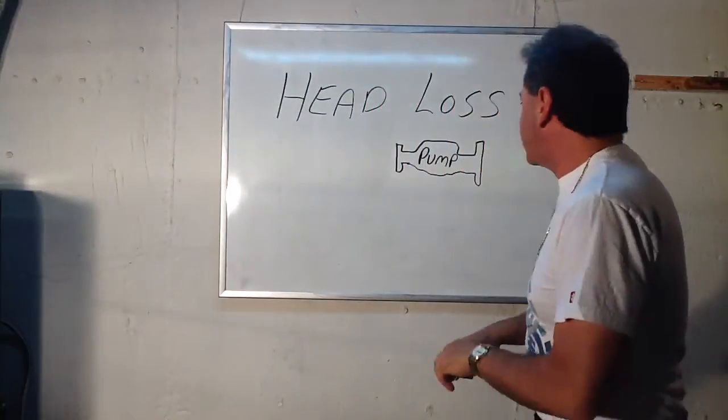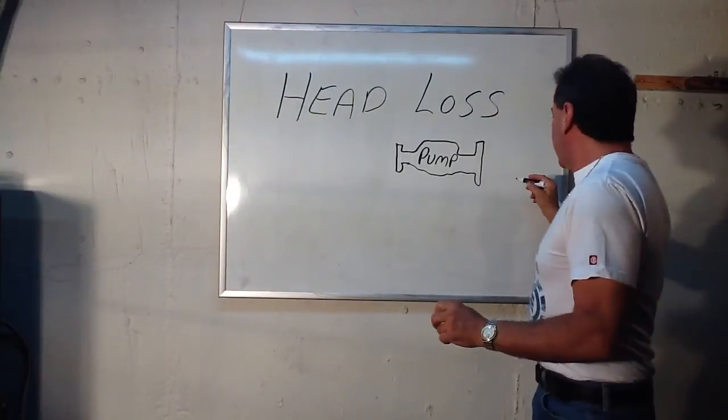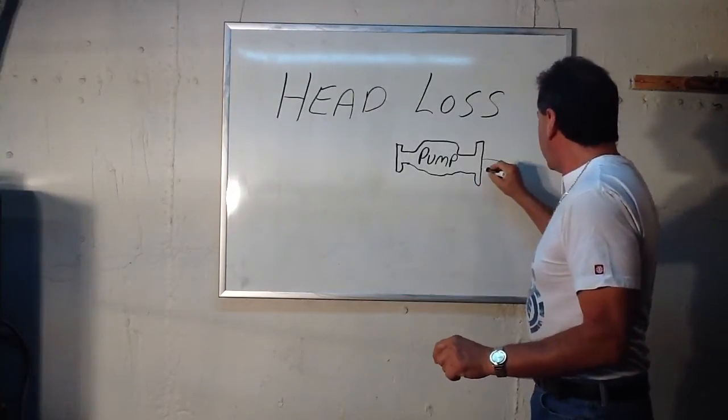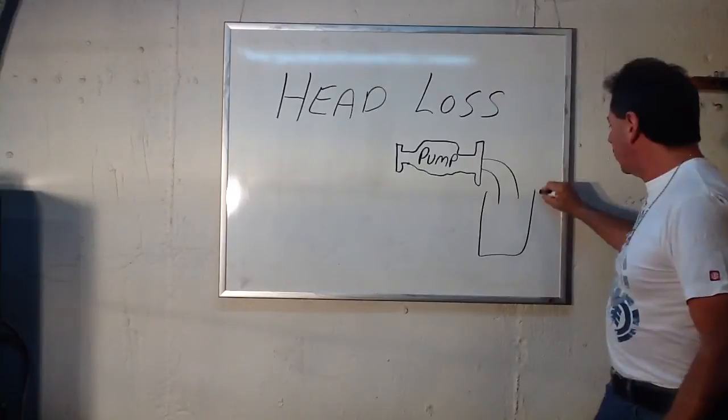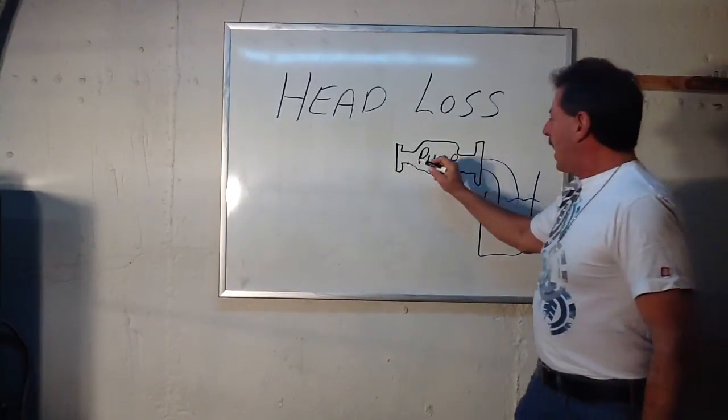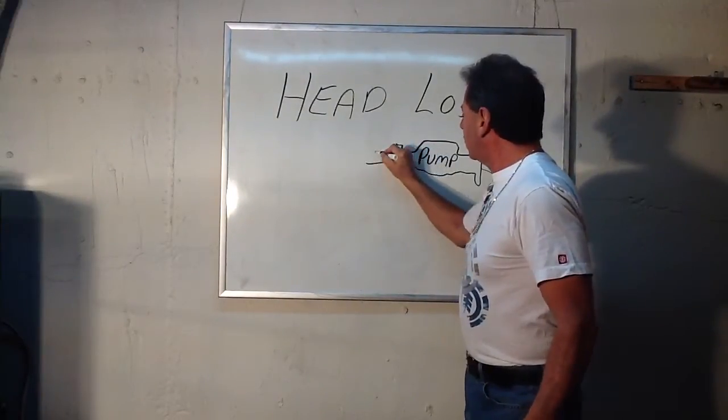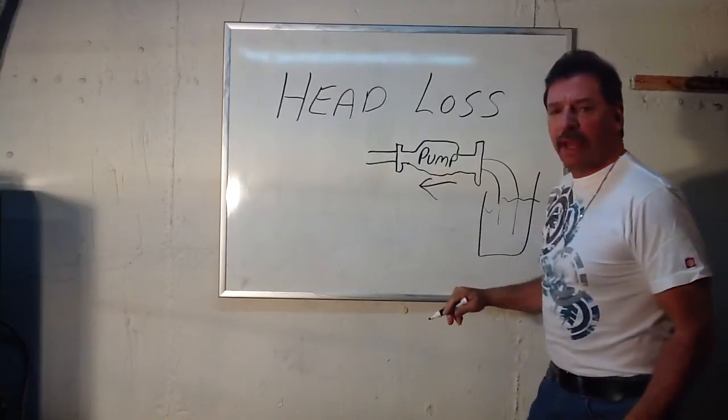And what head loss is, is simply this. If you have a circulator pump and you put a hose on one end into a bucket of water and start pumping the water out of the bucket, and it'll only pump through maybe a 2 or 3 inch piece of copper, of course the pump is pumping this way.